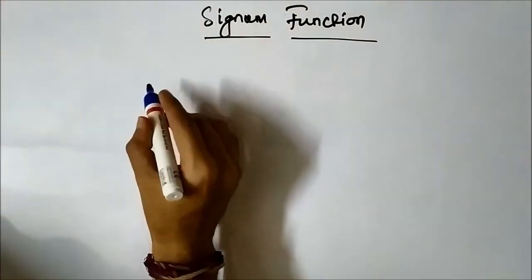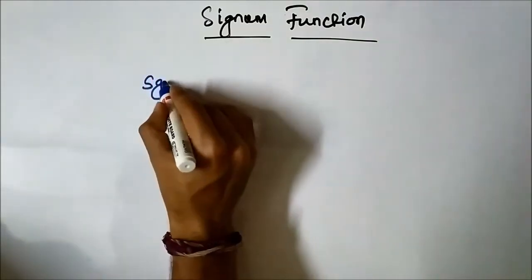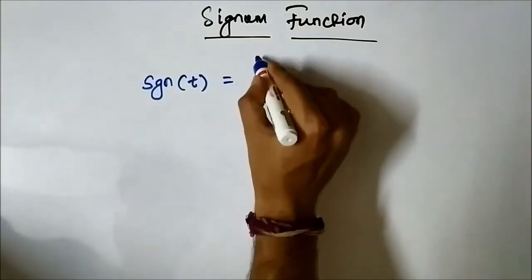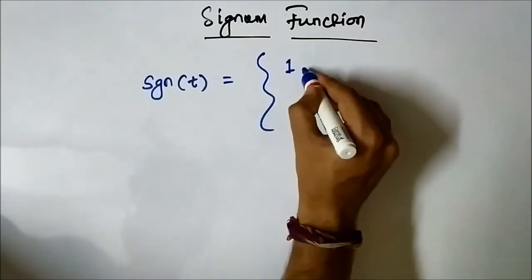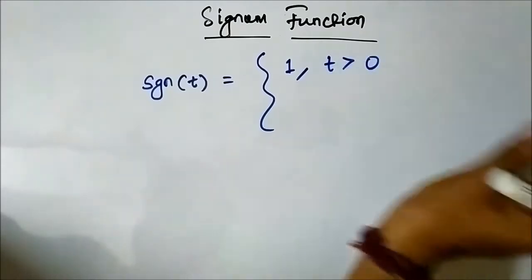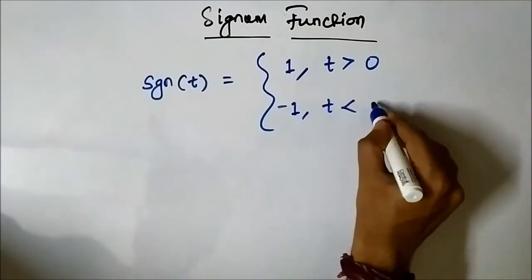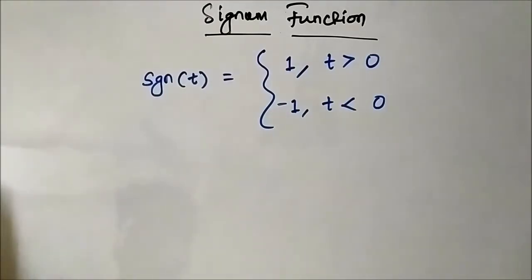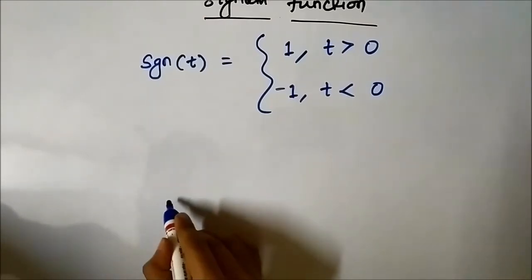The signum function is represented as sgn, and it is always a function of t in the continuous time domain. It is represented as: the value of the signal is 1 for t greater than 0 (positive time), and minus 1 for t less than 0 (negative time). The waveform of the signal will look something like this.